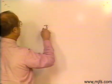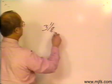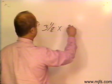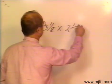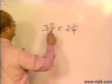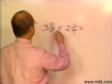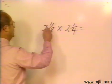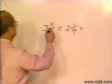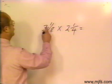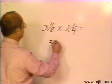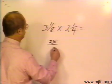If I have say 3 and 1/8 times 2 and 1/4, I would have to make those mixed numbers complete fractions. So I would take 8 times 3 for 24 plus 1, so that would give me 25 over 8.